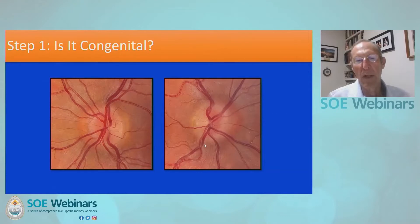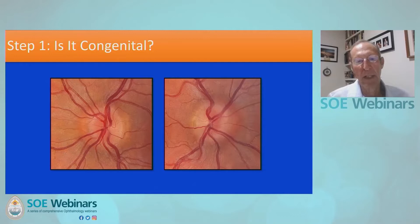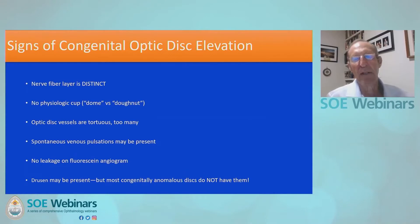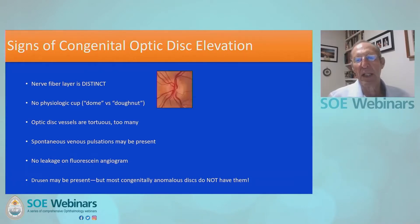After giving it a look, I'm sure you'll agree this is a very difficult assessment. It turns out the one on the left is congenital and the one on the right is acquired. The first feature of congenital optic disc elevation is that the nerve fiber layer is generally distinct. Looking at the margins of the optic disc, you would generally see they have a distinct border.